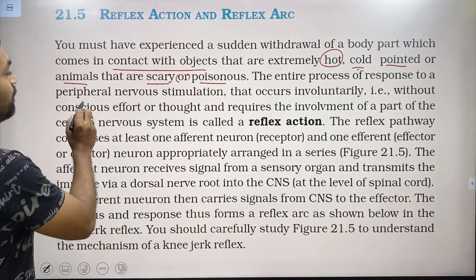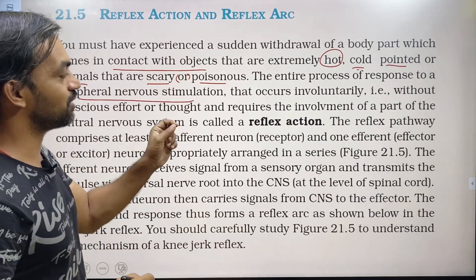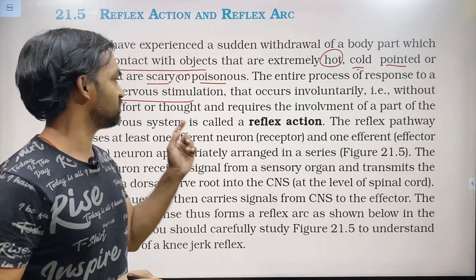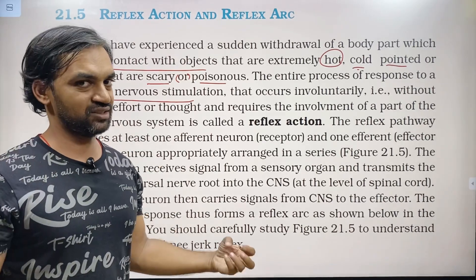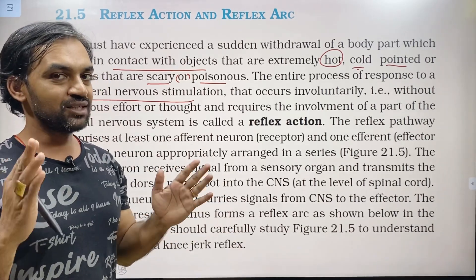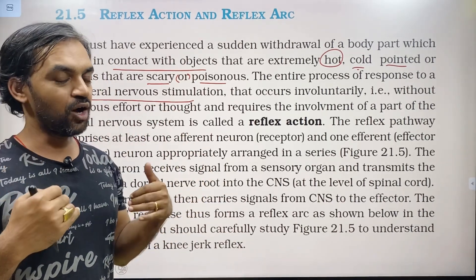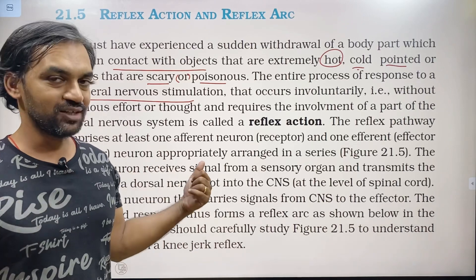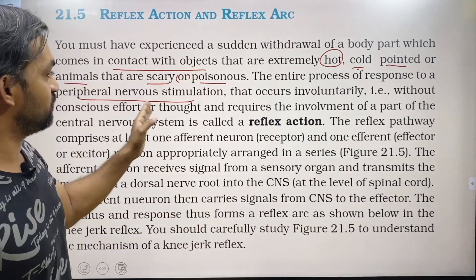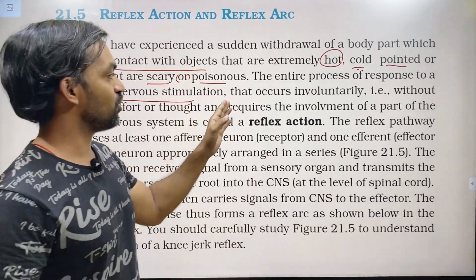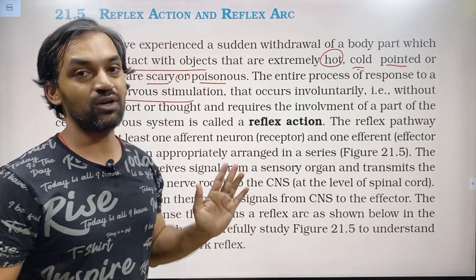This response involves peripheral nerves stimulation. The peripheral nervous system consists of all the nerves, while the central nervous system is the brain and spinal cord. This peripheral nervous stimulation occurs involuntarily.